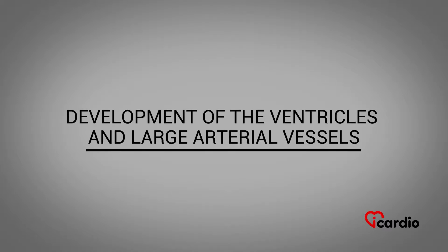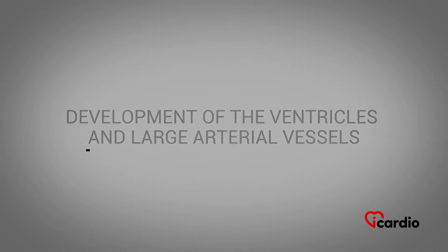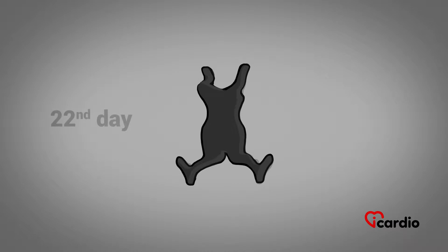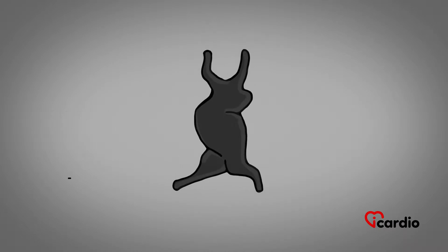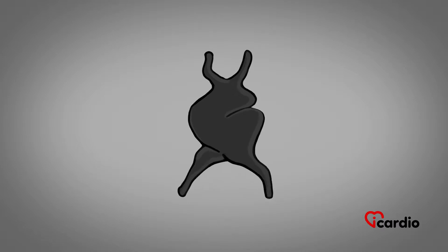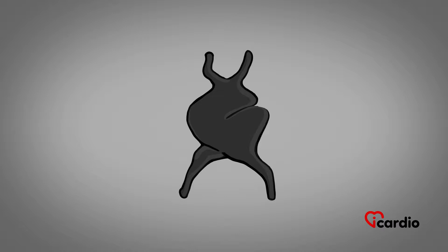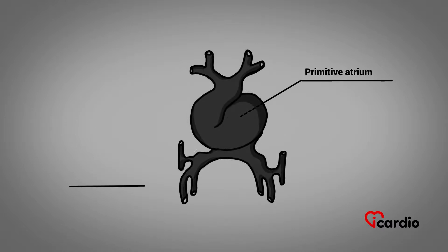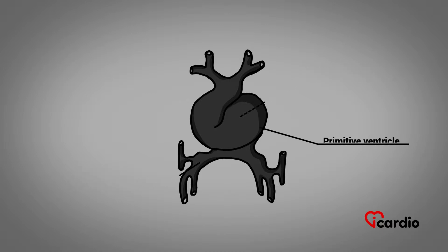On the 22nd day of the embryo's development, the cardiac tube forms constrictions and enlargements called curvatures. These are the very primitive structures of the heart to come. The uneven growth of the cardiac tube leads it to fold back on itself in a precise manner on the 23rd day. The primitive atrium and sinus venosus move behind the primitive ventricle and arterial bulb.